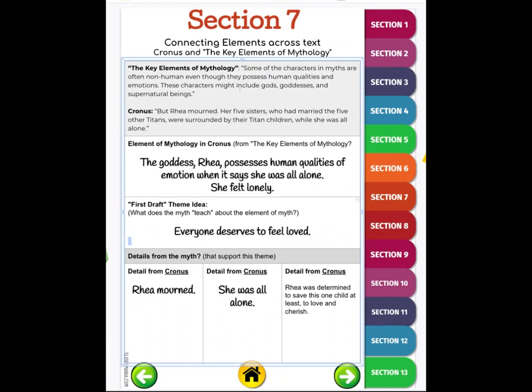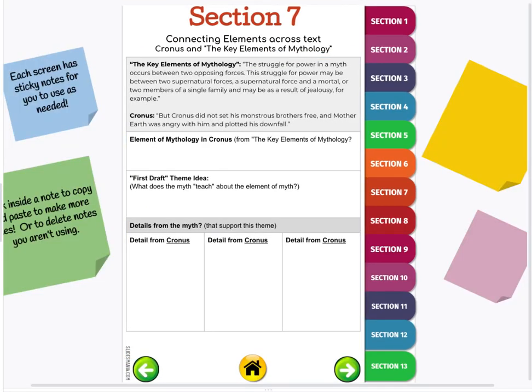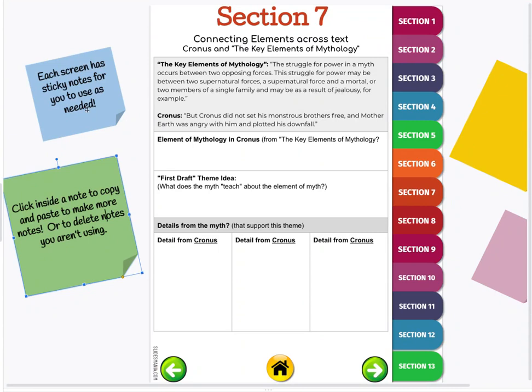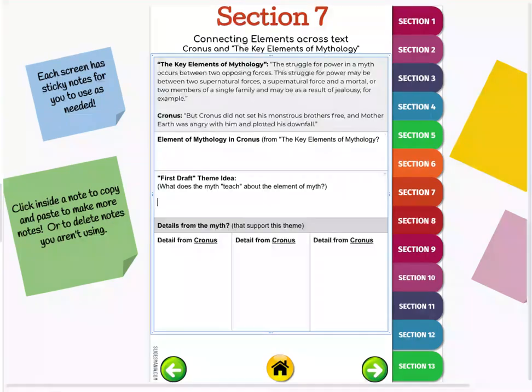That was just from one little section. Unlike slide twenty-one, you are going to go through this statement from The Key Elements of Mythology and then this passage from Cronus and see if you can come up with the connection between those two. Then you're going to put that information down in this area. I did include sticky notes here so you can use these as you need to or delete them. You're going to come up with an idea for a theme, what's the message this section is trying to teach you about mythology.